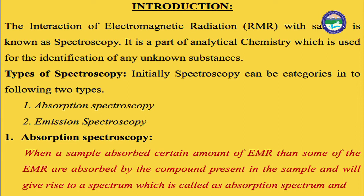Types of spectroscopy: spectroscopy can be categorized into two types — absorption spectroscopy and emission spectroscopy. This is the basic classification. In absorption spectroscopy, when a sample is provided with electromagnetic radiation and the sample absorbs it, the electrons present undergo excitation. The movement of electrons from low energy state to high energy state occurs during absorption. The spectrum obtained at that time is called the absorption spectrum, and this phenomenon is known as absorption spectroscopy.